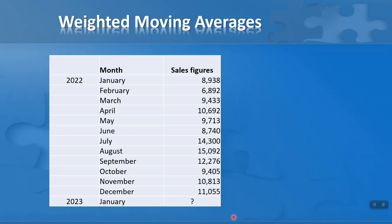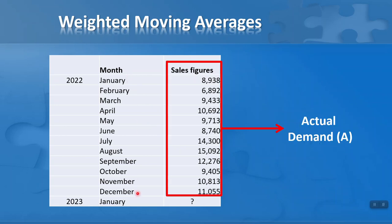Let's take a look at an example. Here's some sales figures data I've made up for this lesson, showing fictitious data for the 12-month period for the year 2022. These are the actual demand figures — how many units were sold each month. What we want to do is use this data to make a prediction for January 2023, which we might need for budgetary purposes or to determine what stock levels to keep for anticipated demand.